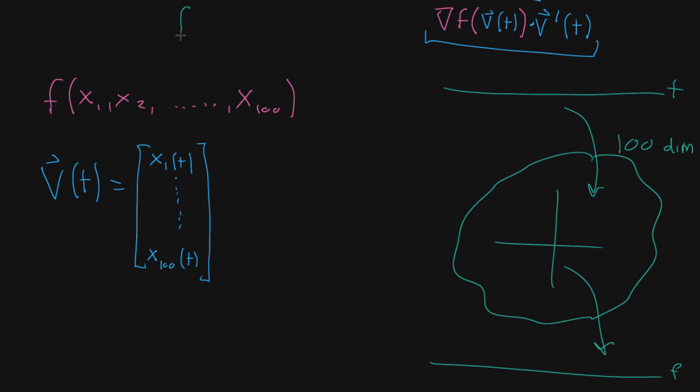And the way you'd write that out is you'd say f composed with the output of v, so f composed with v of t, and what we're interested in doing is taking its derivative. So the derivative of that composition is, and I told you, and we kind of walked through where this comes from.